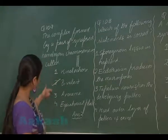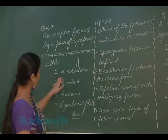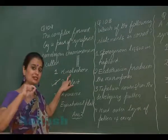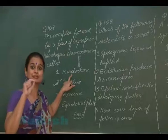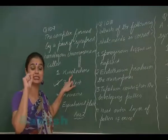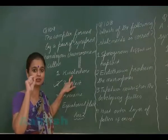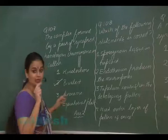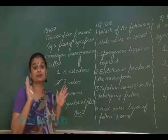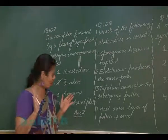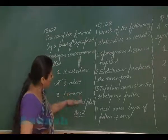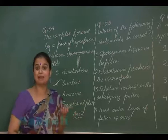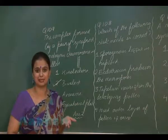Looking at the other options for question 107: the kinetochore is a disc present over the centromere. Axoneme is part of the flagella. The equatorial plate represents the metaphase plate.